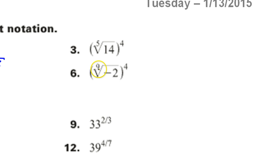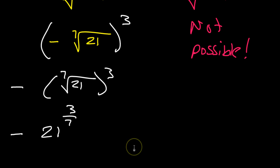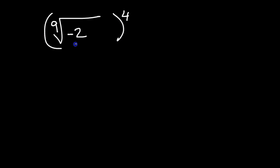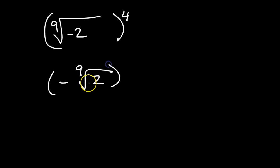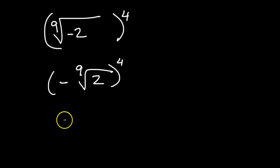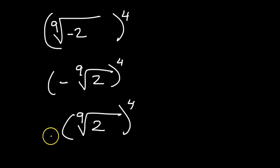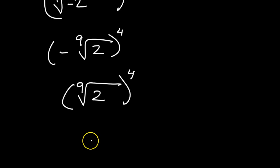For problem 6, I've got the 9th root of negative 2 to the 4th power. Will the negative make it out? Odd root — the negative survives. If this were an even root I'd immediately say not possible. But then the 4th power is even, so negative to an even power: poof, that negative goes away. So I'm just dealing with the 9th root of 2 to the 4th power, giving 2 to the 4/9 power.